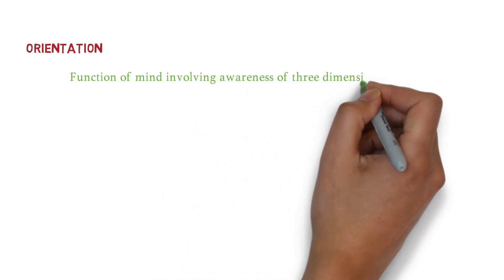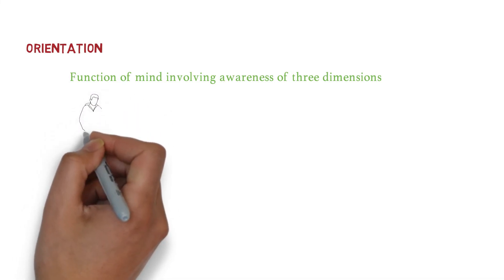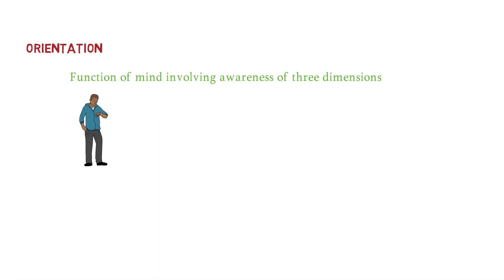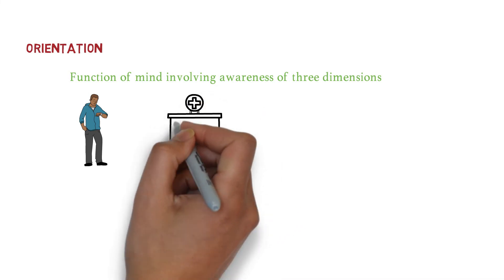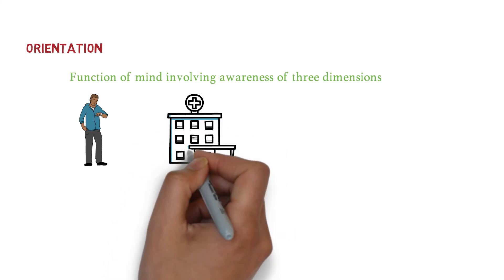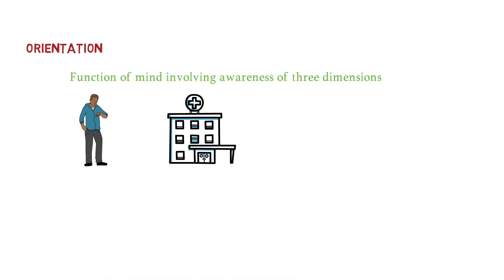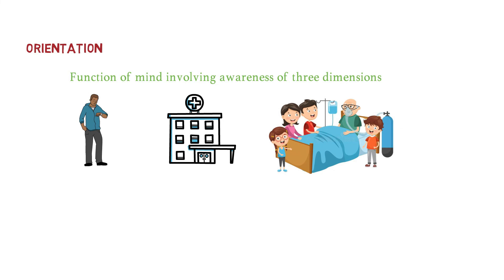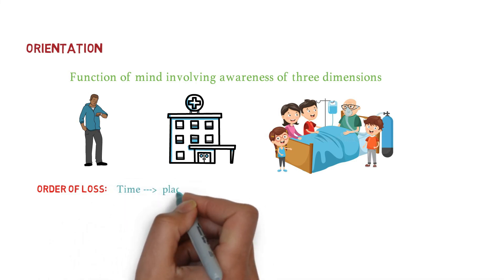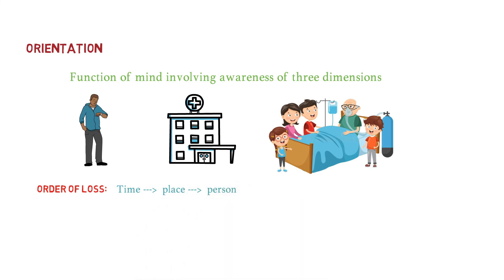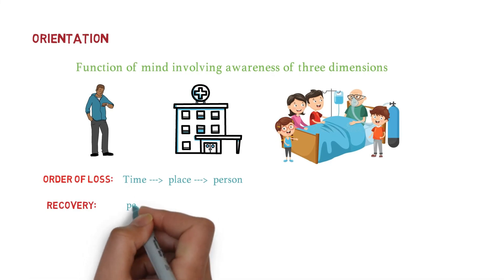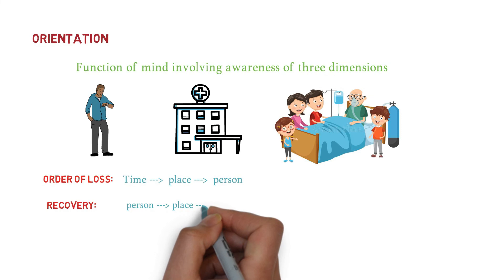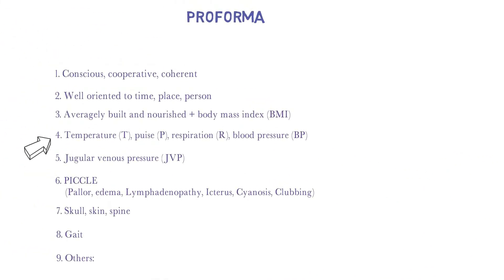The examiner might ask how you assessed orientation. You can say: I asked the patient what time it is, and they correctly told me. I asked where they are, and they said they are in the hospital ward. I asked if they recognize someone, and they correctly identified a family member. Regarding the order of loss: time orientation is the earliest to be lost, followed by place, and person is lost last. Recovery is in the opposite order — person recovers first, then place, and time recovers last.